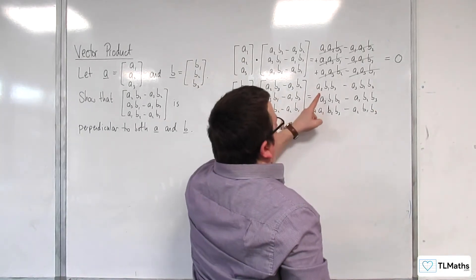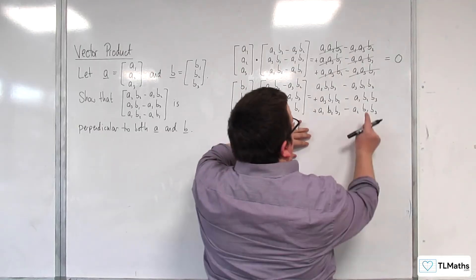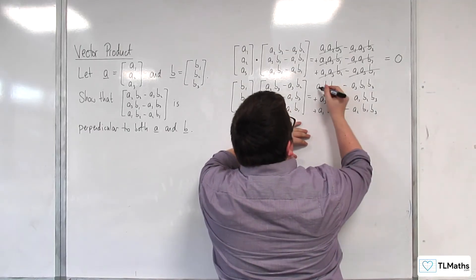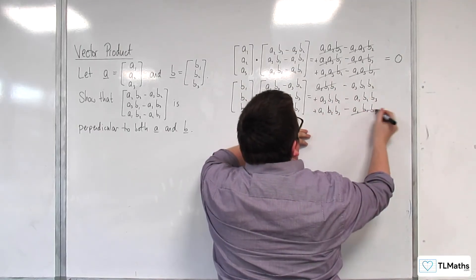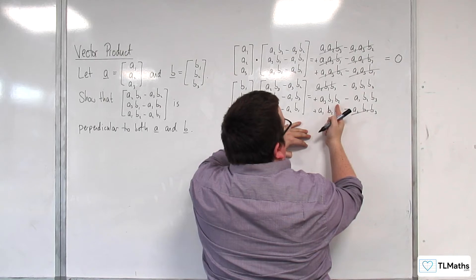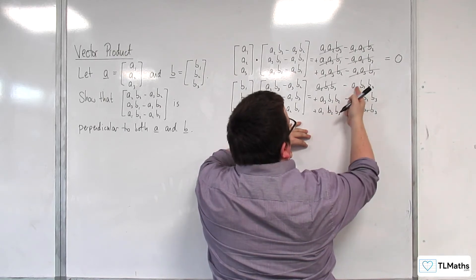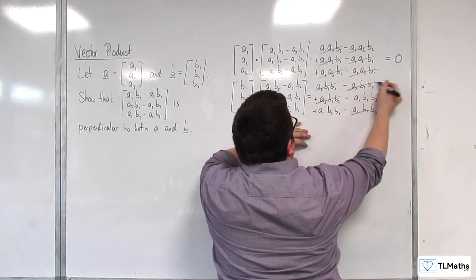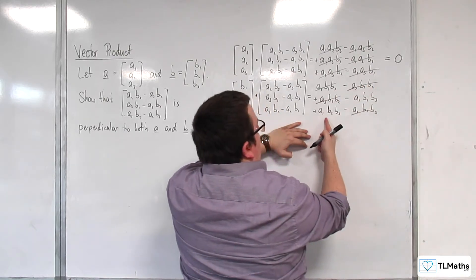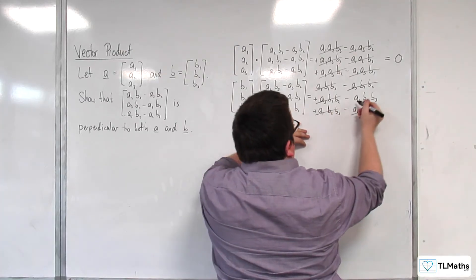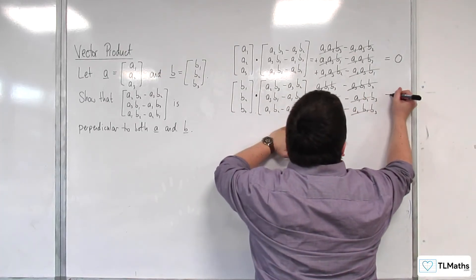Again we get cancellations: a2·b1·b3 and −a2·b1·b3 cancel. a3·b1·b2 and −a3·b1·b2 cancel. And a1·b2·b3 and −a1·b2·b3 cancel. So they're all gone.